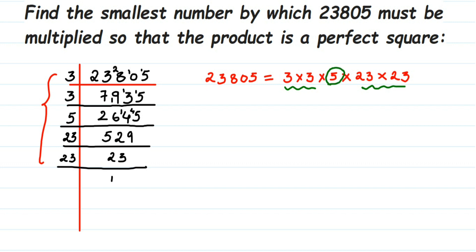So the smallest number to be multiplied here will be 5. If there is another 5 present, then this number will pair up and the number will become a perfect square.